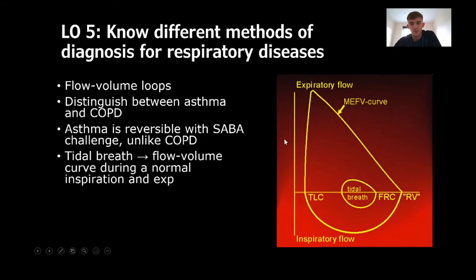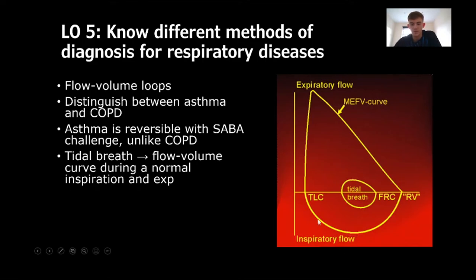Flow-volume loops plot inspiration and expiration on the y-axis against volume on the x-axis. During expiration, the curve starts sharply as air is forced out then gradually slows, while inspiration is more consistent, reaching a peak at the bottom. This is a useful way to distinguish asthma from COPD: asthma is reversible with short-acting beta-2 agonists, unlike COPD. If salbutamol is given, patients with asthma show improvement on the flow-volume loop, whereas COPD patients do not.